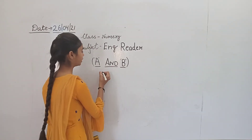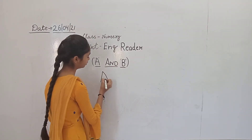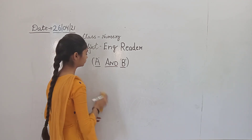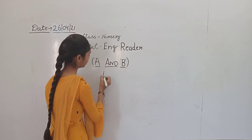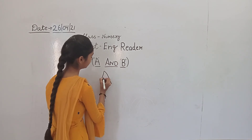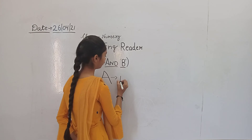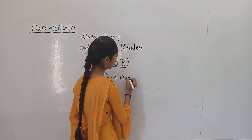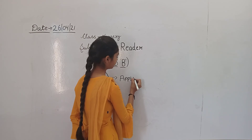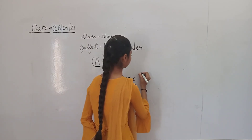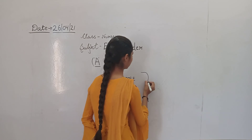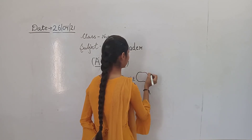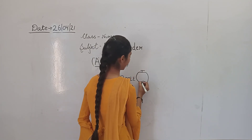What can we learn? A for apple. A for apple. B for... And now what do we have?